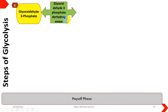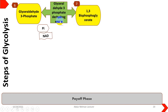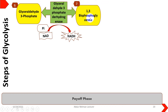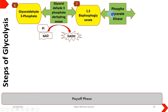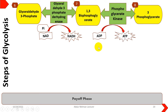The whole pathway of the payoff phase will be repeated twice because two molecules of glyceraldehyde 3-phosphate are produced. Glyceraldehyde 3-phosphate will be converted into 1,3-bisphosphoglycerate with the help of glyceraldehyde 3-phosphate dehydrogenase, with the utilization of one NAD⁺ molecule and addition of one inorganic phosphate, resulting in the generation of NADH. 1,3-bisphosphoglycerate is a rich source of energy because two phosphate molecules are present; phosphoglycerate kinase then converts it into 3-phosphoglycerate with the production of one ATP molecule.